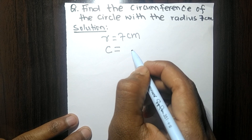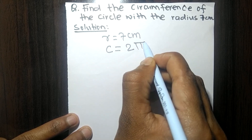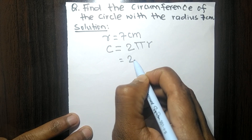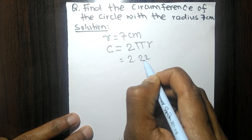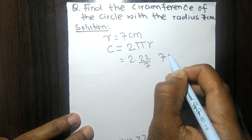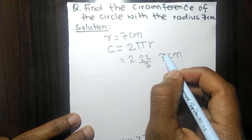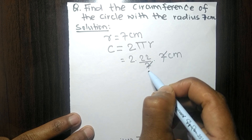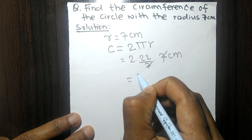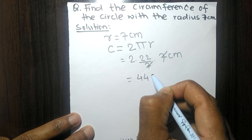The circumference of a circle is 2πr, where π equals 22/7 and the radius is 7 centimeters. The 7s cancel, and the remaining calculation is 2 times 22, which equals 44.